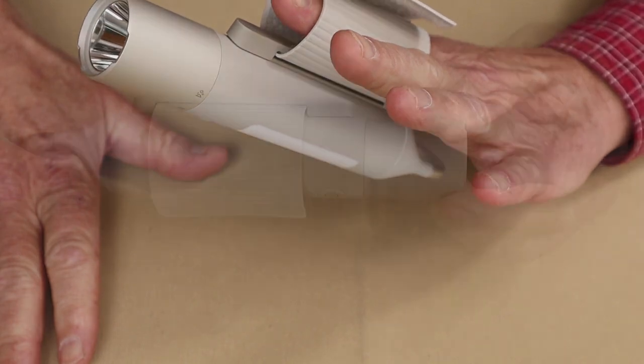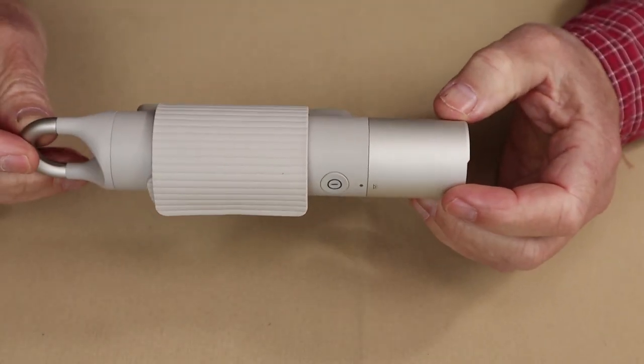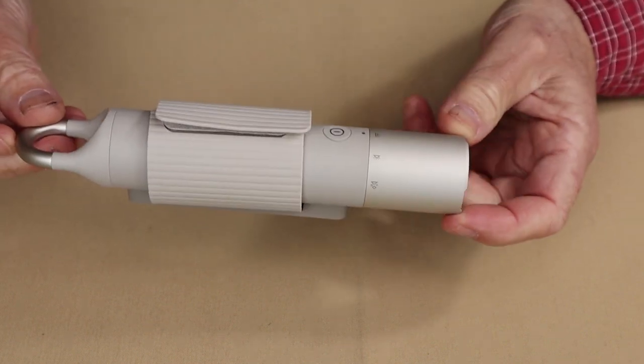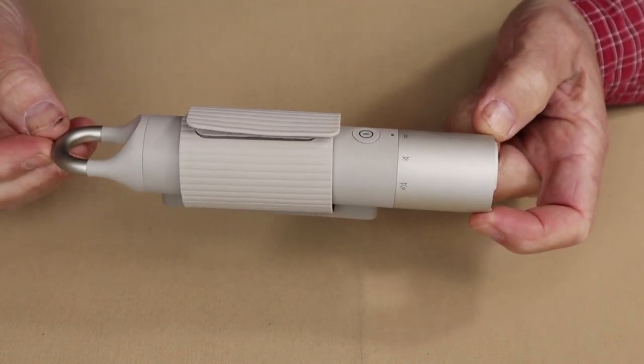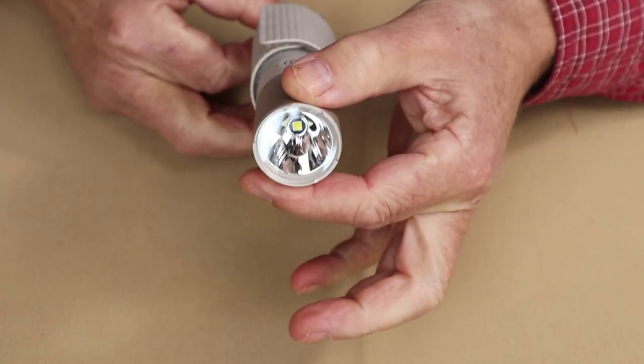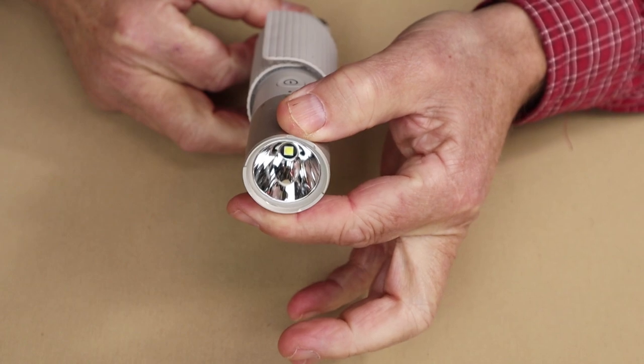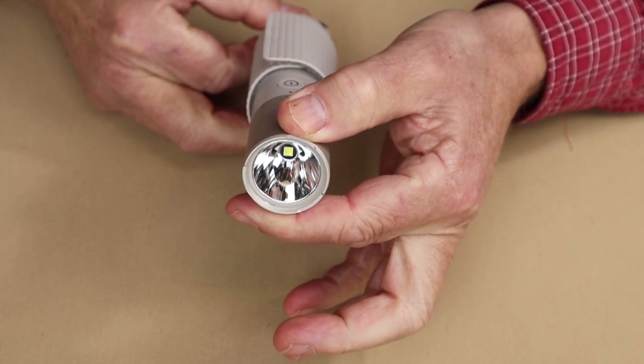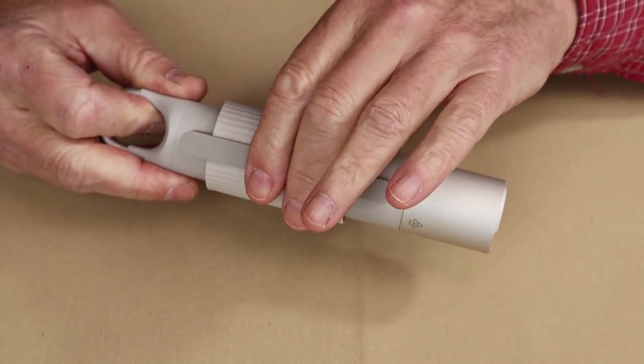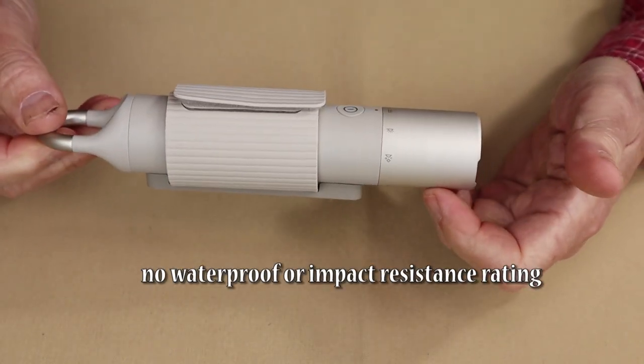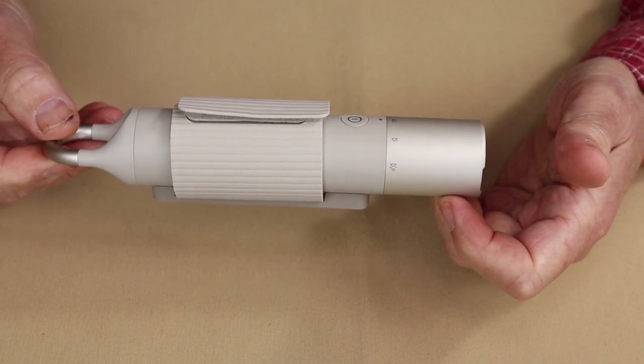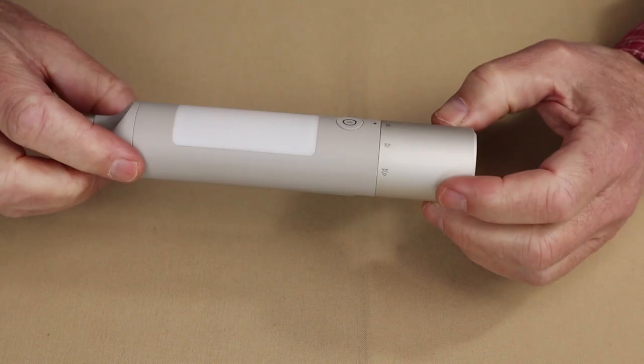All right, let's go over the physical specifications for the HOTO Duo. It has an overall length of seven and three quarters inches, which is 196 millimeters. It has a diameter of the light itself at one and three eighths inches or 35 millimeters. That does not include the wrap and bar on the side. And it has a weight of 6.84 ounces, which is 194 grams.